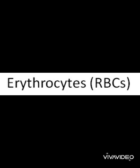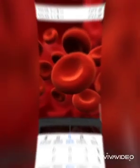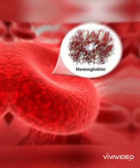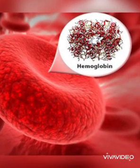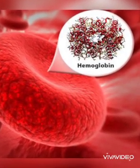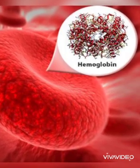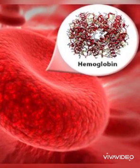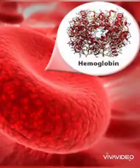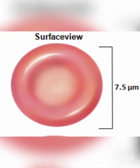Let us have a very quick discourse on red blood cell structure. Remember, red blood cells are also known as the erythrocyte. They are called red blood cells because they account for the redness of the blood, which is due to the hemoglobin that is present in the red blood cell.